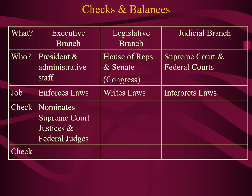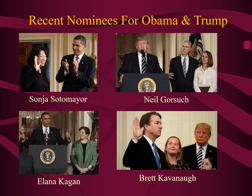One way that the executive branch can check or influence the actions of the judiciary is that if there's a vacancy on one of the courts, the president has the sole power to nominate someone to fill that vacancy. Here we see some examples of recent nominees for both President Obama and President Trump — each has named two members to the United States Supreme Court.